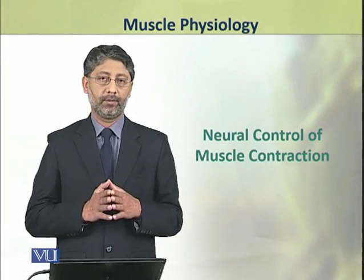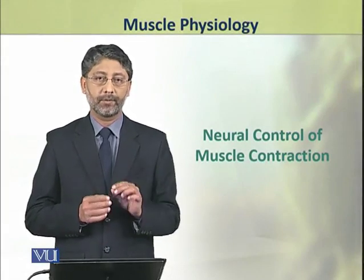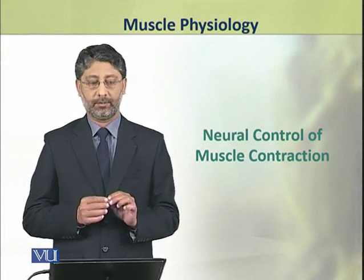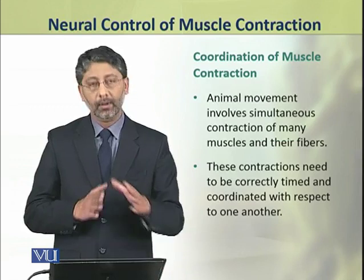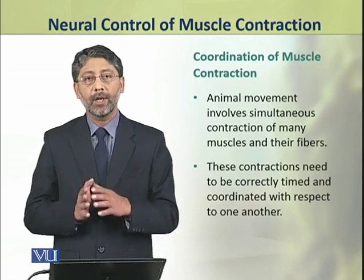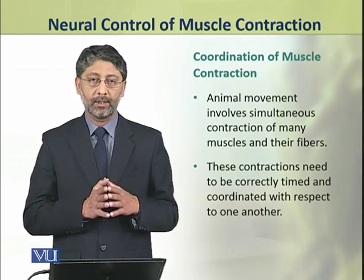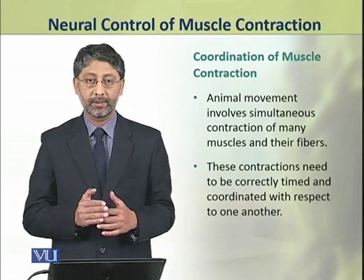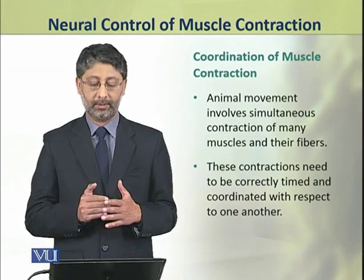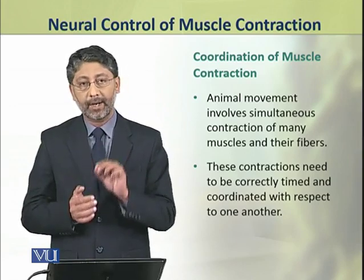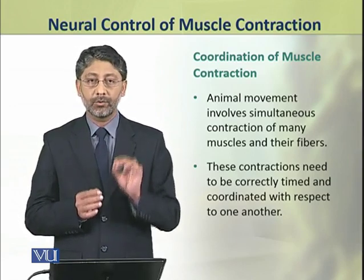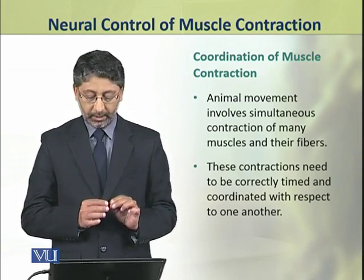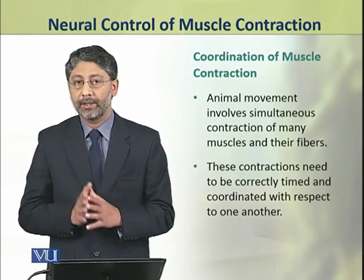Dear students, in this topic we shall discuss the neural control of muscle contraction. Animal movement involves simultaneous contraction of many muscles and their fibers. These contractions need to be correctly timed and coordinated with respect to one another.